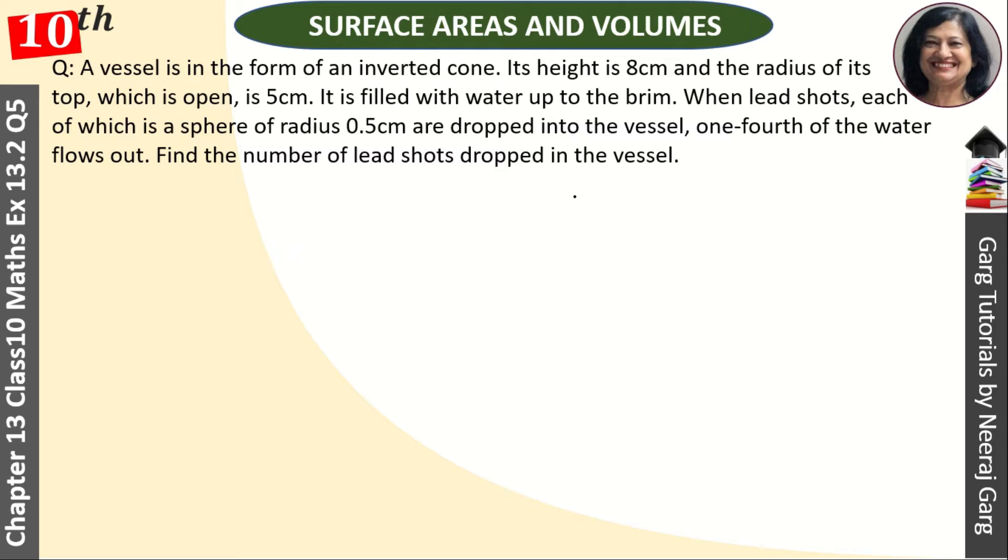We have an inverted cone and the water is filled to the brim. Height is 8 centimeters, radius is 5 centimeters, and the cone is filled with water. When we put lead shots in this vessel, one-fourth of water flows out.